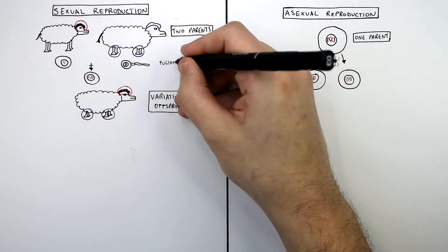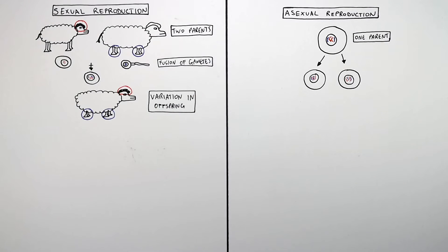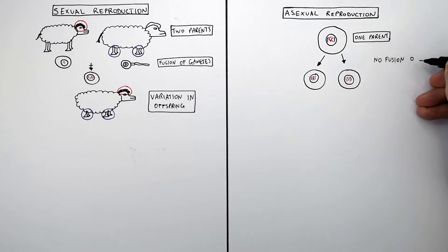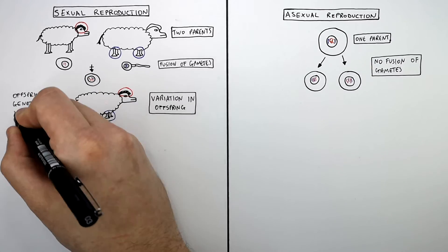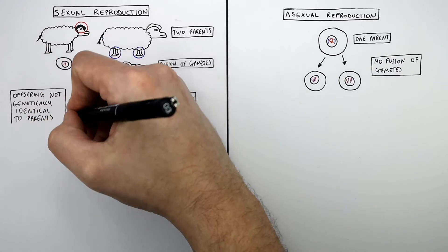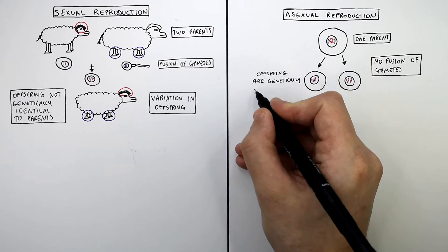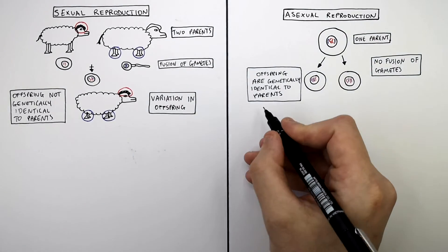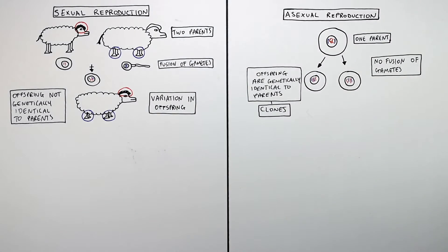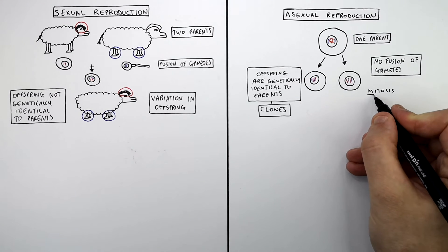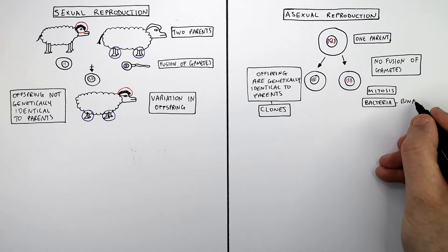During sexual reproduction, there is a fusion of gametes — in this case, sperm and egg cells. During asexual reproduction, there is no fusion of gametes. In sexual reproduction, the offspring are not genetically identical to the parents because the offspring show variation, whereas during asexual reproduction, the offspring are genetically identical to parents. We call these offspring clones — clones are genetically identical. Examples of asexual reproduction are mitosis in cells and bacteria that divide by binary fission.